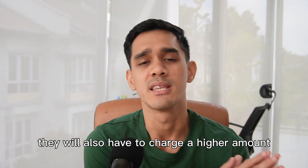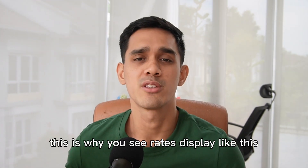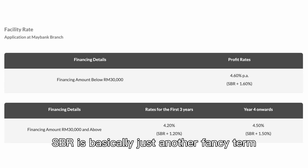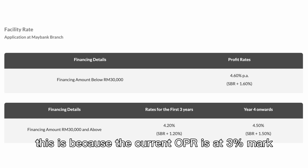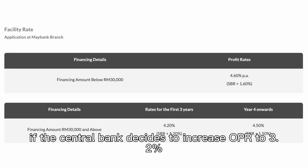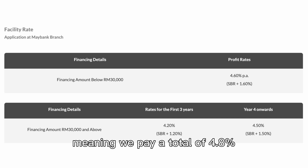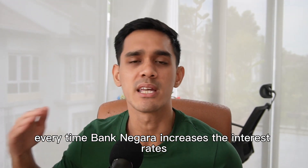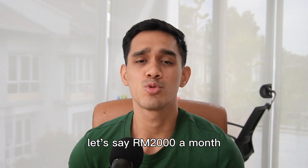When they have a higher cost of borrowing themselves, they will also have to charge a higher amount when loaning out money to consumers like ourselves. This is why you see rates displayed like this when taking out loans such as ASB financing. SBR is basically just another fancy term, but it is benchmarked against Malaysia's OPR. So in this example, you can see it's SBR plus 1.6% for a total of 4.6%, because the current OPR is at the 3% mark. If the central bank decides to increase the OPR to 3.2%, then the total interest rate will be 3.2% plus 1.6%, meaning we pay a total of 4.8%. This is the reason why you see many people get upset every time Bank Negara increases the interest rates. Imagine you bought a house in 2021 when interest rates were low and your mortgage payment was, let's say, RM2,000 a month.